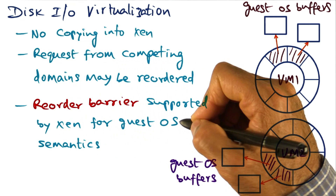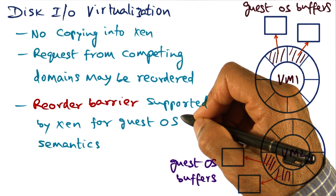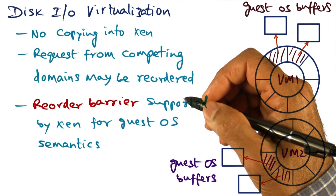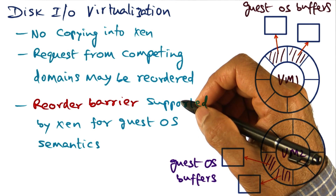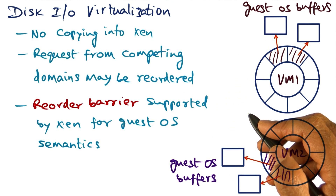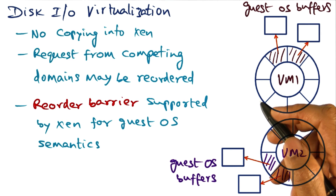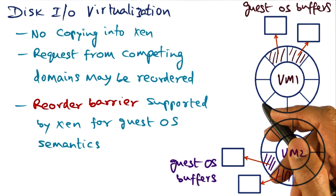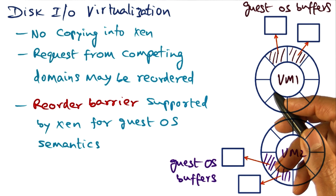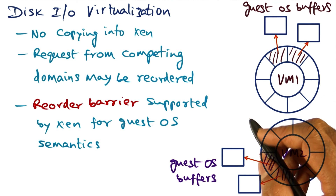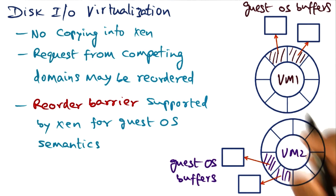Such a reorder barrier may be necessary for higher-level semantics such as write-ahead logging and things like that. That completes the discussion of all the subsystems that need to be virtualized, whether in a fully virtualized environment or a paravirtualized environment. Next, we will talk about usage management and billing.